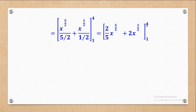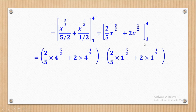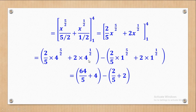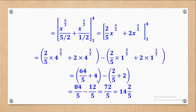After simplifying, substitute the upper limit 4 to get the first bracket, then minus the lower limit 1 to get the second bracket. Using the calculator, simplify each bracket. You get 84 over 5 minus 12 over 5, which gives 72 over 5, reducible to 14 and 2 over 5. That is the answer for Roman 3.